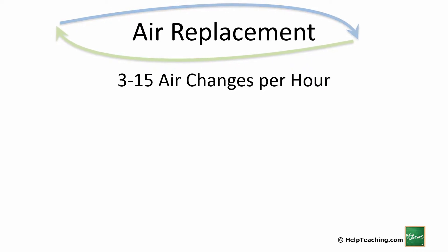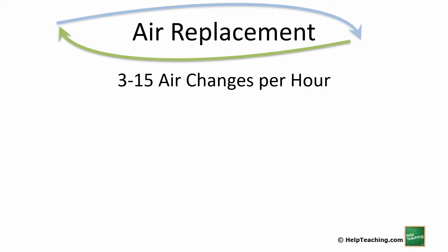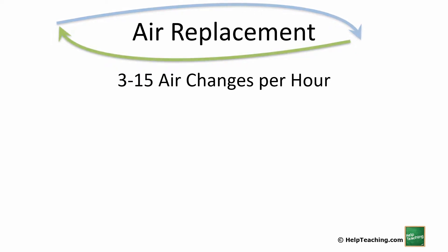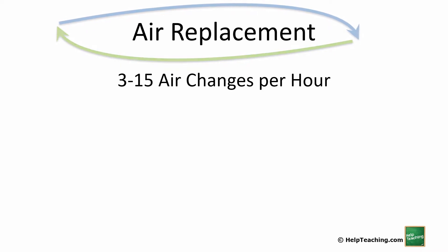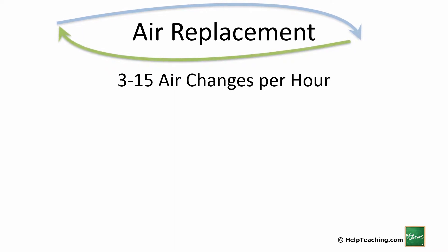For example, in a basement with 4 air changes per hour, whatever the volume of air in that basement is should be changed 4 times an hour — every 15 minutes that air should have been recycled through and you have fresh air back into that room. Some situations, especially a public space with smoking involved, may go up as high as 20 air changes per hour because they want to keep that air changing very quickly.